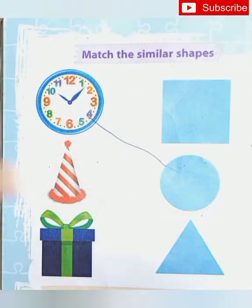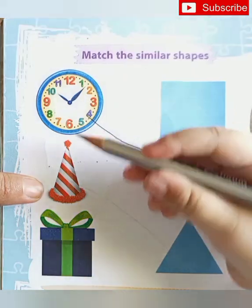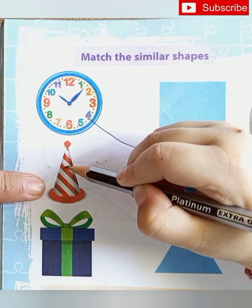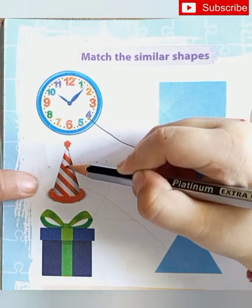Yes. This is? What is this? Cap. Cap. Cap shape is? Triangle. Triangle.